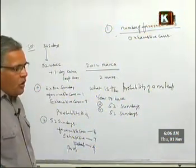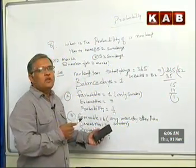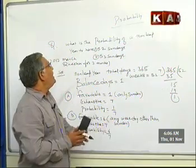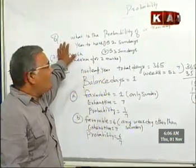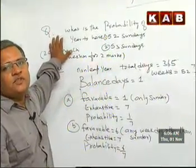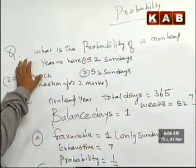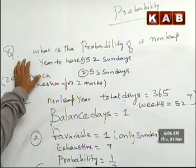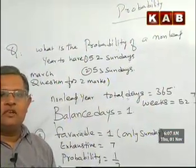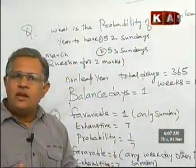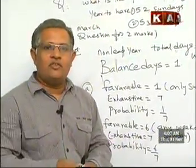Now, for the next problem, we are looking into the topic of probability, which covers around 22 marks. We will deal with a few questions. This first question is based upon the mathematical definition of probability. The mathematical definition is: calculate the number of exhaustive cases for an event, calculate the number of favorable cases for that event, and divide one by the other. This is the mathematical definition of probability. This problem was asked in 2012 March for two marks.